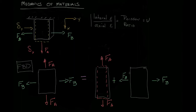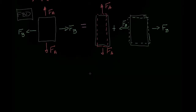Likewise, if we look at the beam just from the perspective of the second force, it's going to be stretched in the horizontal direction and going to shrink in the vertical direction. So by using superposition, we can find the strain due to force A in both the x and y directions and add it to the strain due to force B in the x and y directions, and this will equal the total strain in both the x and y directions.